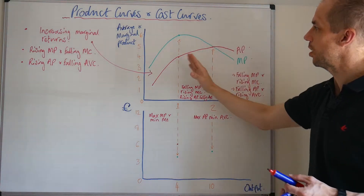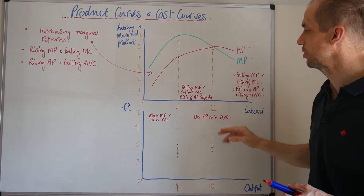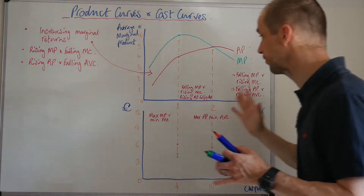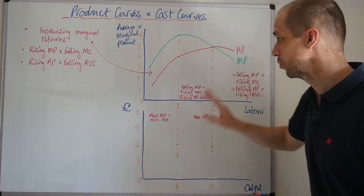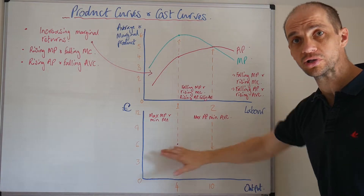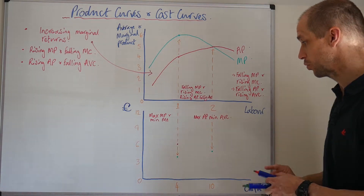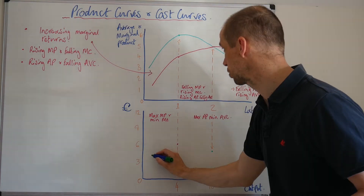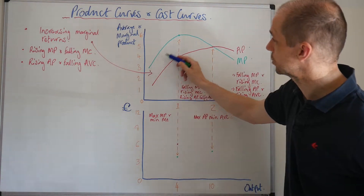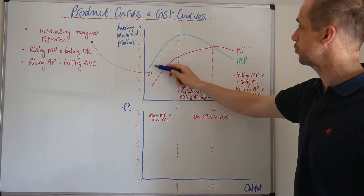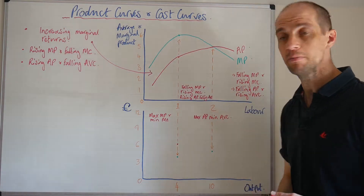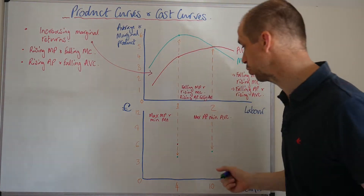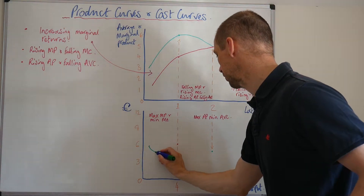Now let's see how it is reflected when it comes to the marginal cost and the average variable cost. Starting with our marginal cost curve — because the marginal product is actually rising, it means that the marginal cost is of course falling during this period.